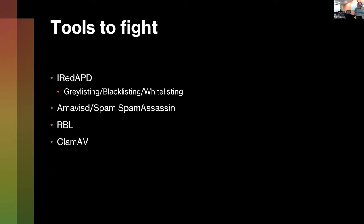There are some nice tools built into the iRedMail script, which basically just installs all the servers and configures them for you. iRedAPD handles greylisting, blacklisting, and whitelisting. It also uses SpamAssassin to check whether your email looks like spam and if it's on any block lists. It also runs a quick copy of antivirus just to make sure there aren't any nasty surprises.